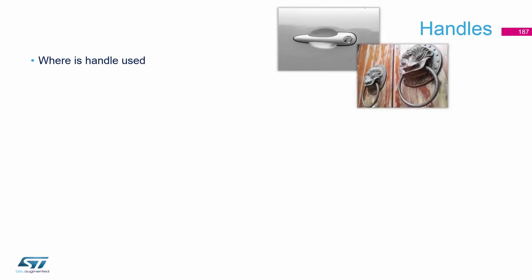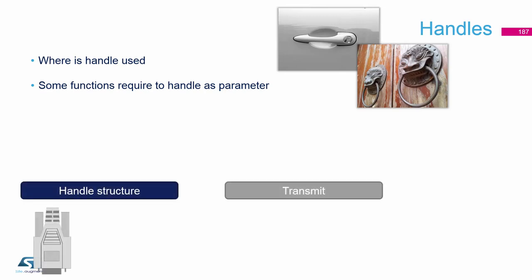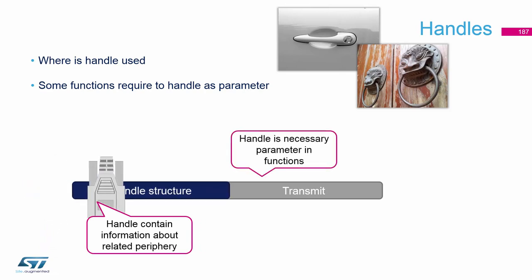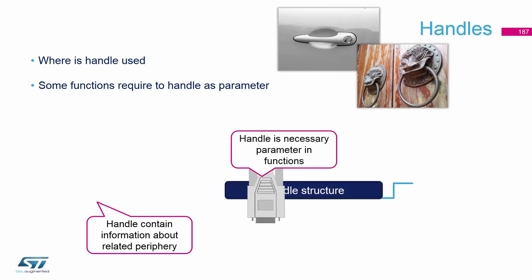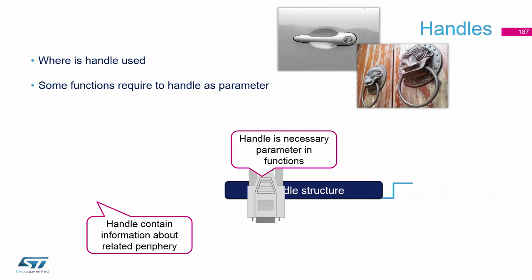In the last hands-on, we first used the handles — the global variable which we used to send data over the transmit function. The handles are usually used to notify our HAL API what the parameters are and what the function needs to do, which is the periphery. For transmitting, we need to give this handle. Always define handles as global, or you can use a different approach.